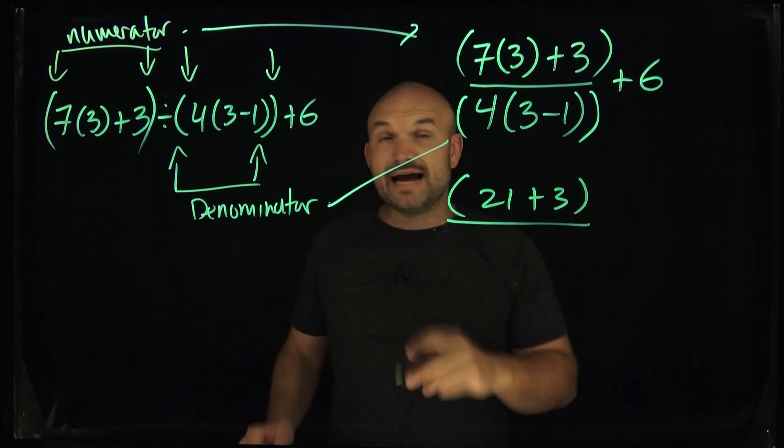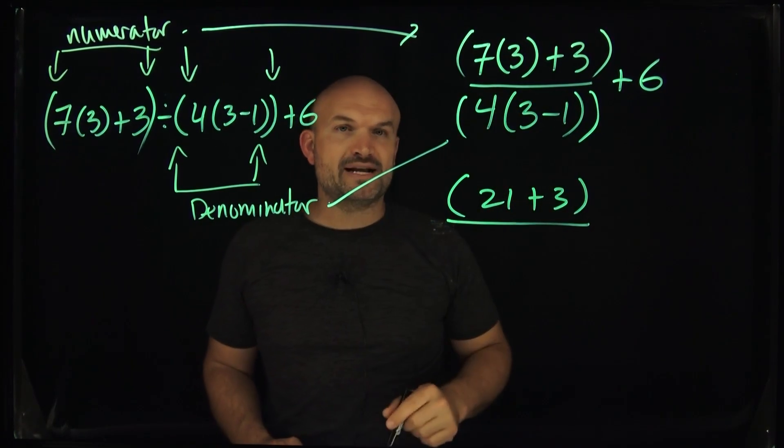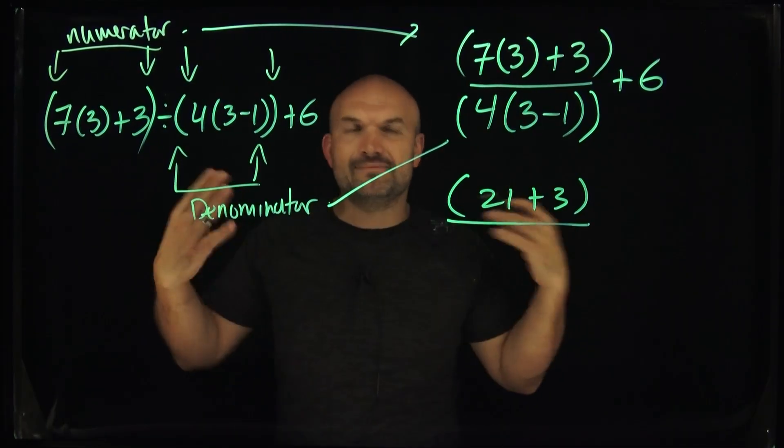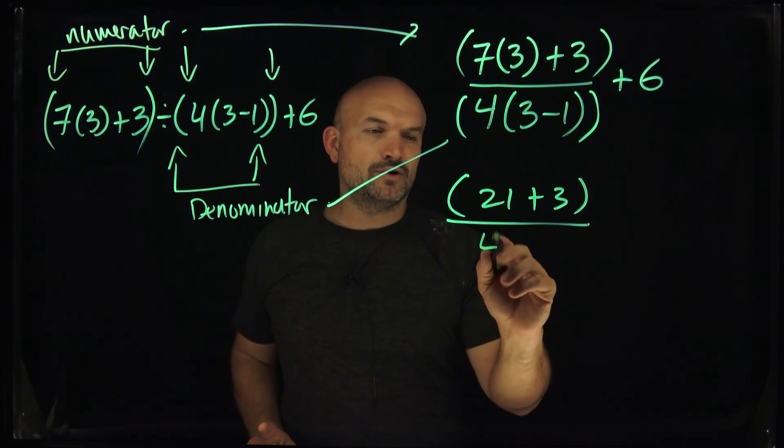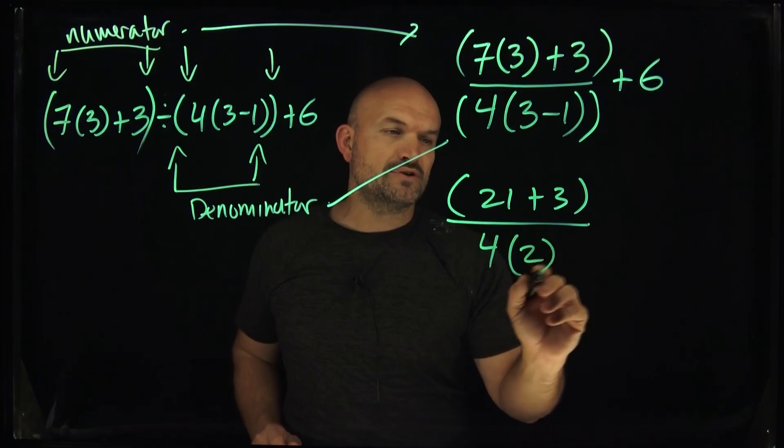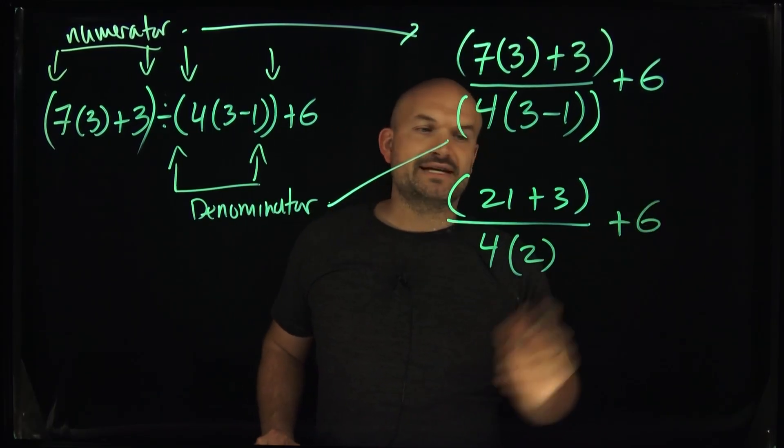That's going to be divided by. Now, in this case, I do have actually an operation inside my parentheses. That's going to be a three minus one, which is going to be a two. Again, I know I can multiply it, guys, but I want to go through this nice and slow for you. So that's going to be a four times a two. And again, remember, we still have a six.